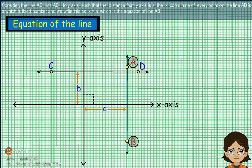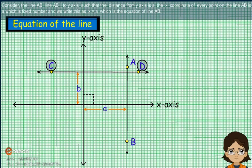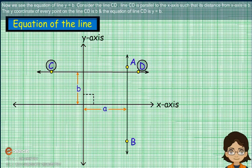Consider line AB, which is parallel to the y-axis such that its distance from the y-axis is a. The x-coordinate of every point on line AB is a, which is a fixed number, and we write this as x = a — this is the equation of line AB. Now consider line CD, which is parallel to the x-axis such that its distance from the x-axis is b. The y-coordinate of every point on line CD is b, and the equation of line CD is y = b.